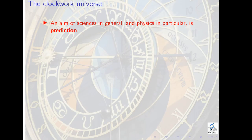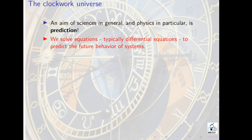It is the aim of all sciences and in particular it is the aim of physics to predict the future. Given the situation today, you should be able to tell exactly what is going to happen. And one of the major tools that we use for this is what are called differential equations. They help us predict future behavior of systems. But in order to solve these equations and get to future behavior, what we need are initial conditions. So these initial conditions are very, very important.